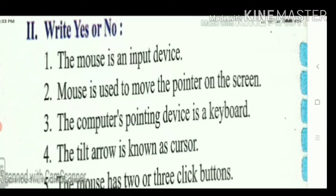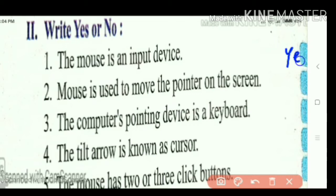Next, write yes or no. The mouse is an input device. Here in the box, you write Y-E-S, yes. Mouse is used to move the pointer on the screen. Yes. The computer's pointing device is keyboard. No.